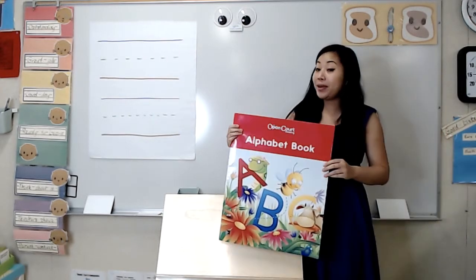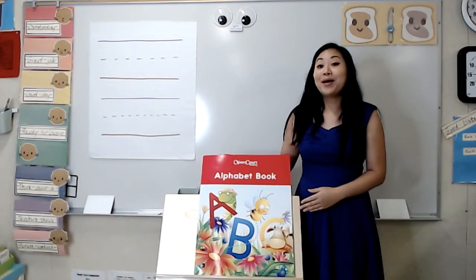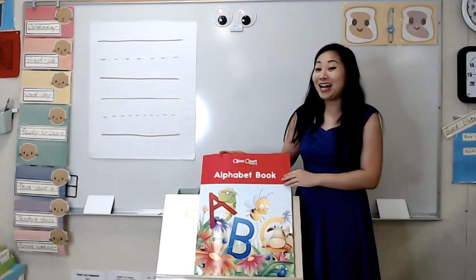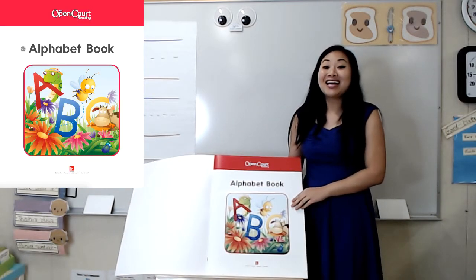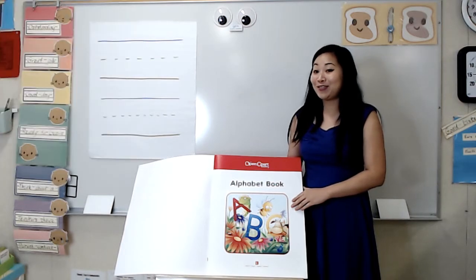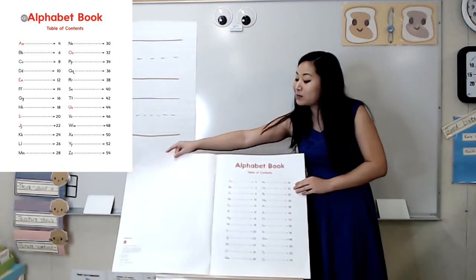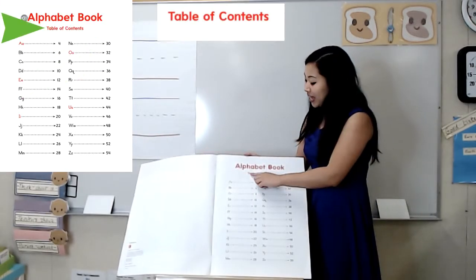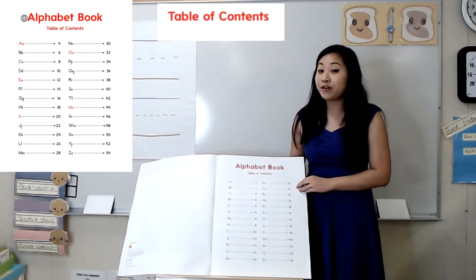Now just like our big book of poems, this book also has a whole bunch of poems, but these poems are all alphabet poems. And when I open it up, I see the title page. That's just to remind you of the title in case you forgot. And when I turn the page again, I see a special place called the table of contents. The table of contents tells you where to find things.